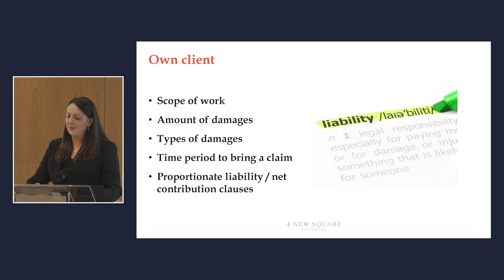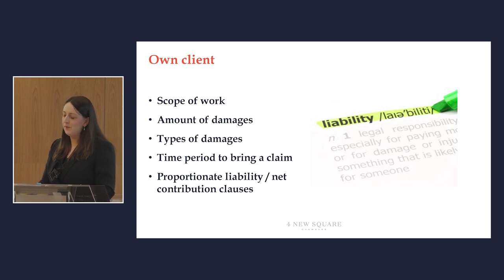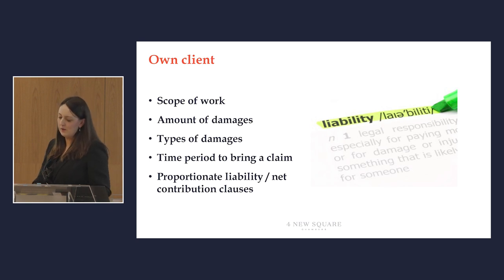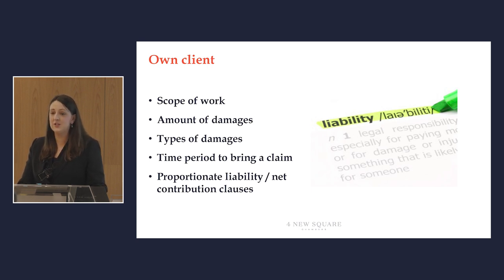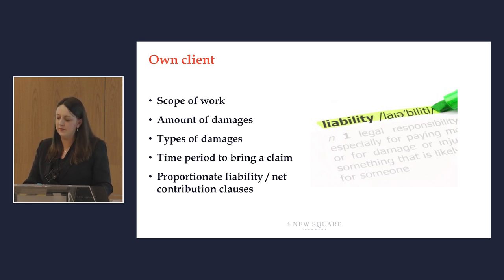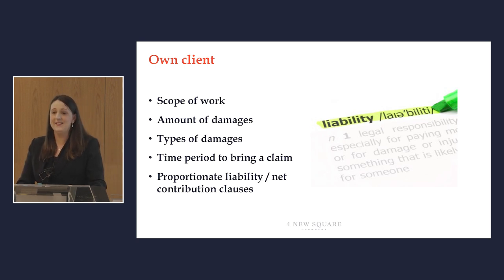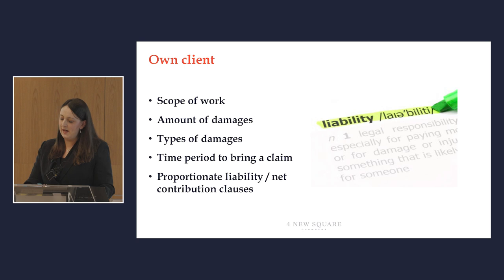Limitation of liability clauses come in a variety of different shapes and sizes, beginning with those applicable to the professional's own client. First and foremost there are scope of work clauses, which exclude a specific duty to do something which might otherwise be accepted. For example, an architect's terms may set out a duty to carry out periodic inspection of building works but expressly state that the architect is under no duty to supervise the execution of the works. On one view the effect of such clauses is simply to define what the professional undertakes to do rather than to exclude or limit liability.